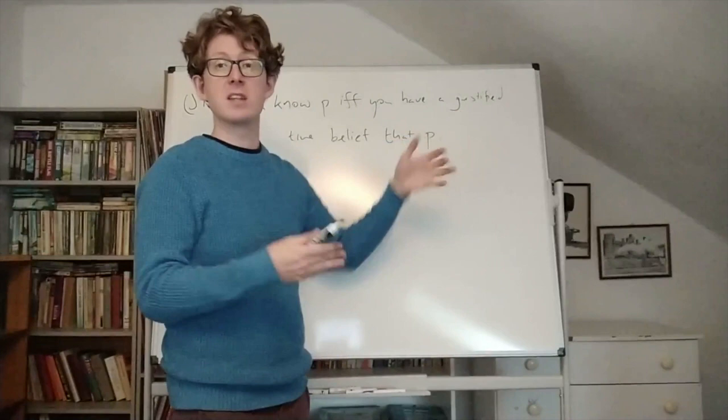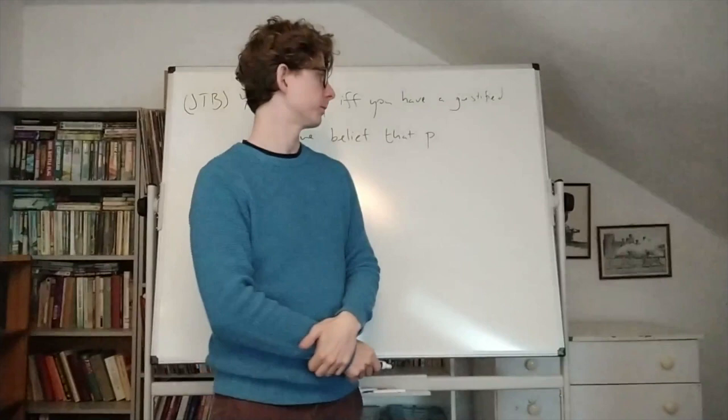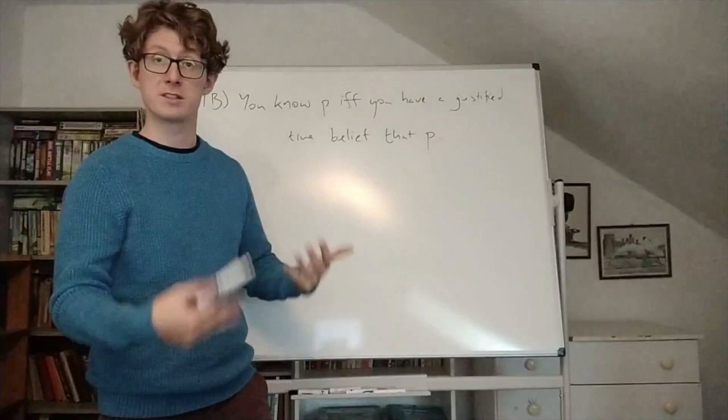You might think what distinguishes that merely accidentally true beliefs from knowledge is that you're not rational in having the merely accidentally true beliefs. And indeed, this is the idea behind the justified true belief theory. The thought was, once you add justification to the true beliefs, now you've got sufficient conditions as well as necessary conditions.